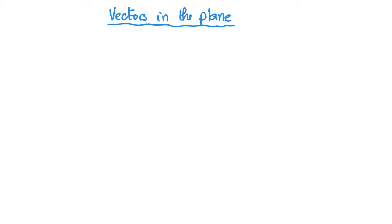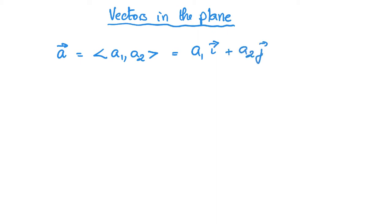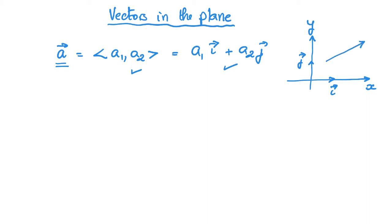In this video I will take a look at vectors in the plane and some of the most important ideas and concepts. A vector in the plane is written in the form (a1, a2) with two components, or it can also be written in the form a1*i + a2*j, where i and j are the unit vectors on the x and y axis respectively.